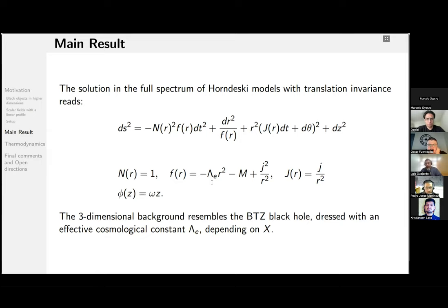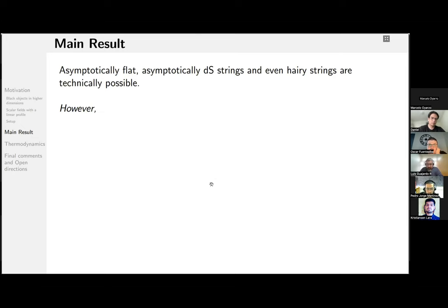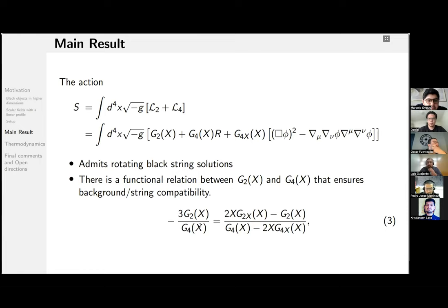Okay. So, since we are working with generic functions G₂ and G₄... In the action, do you have a cosmological constant term, or...? Yes, it is included in the G₂ function. Ah, okay. Yes. Thank you for the question. Thank you. Okay, so, given that we are working with generic functions G₂ and G₄, one can observe that asymptotically flat, and even asymptotically de Sitter strings, or even Kerr strings are technically possible.